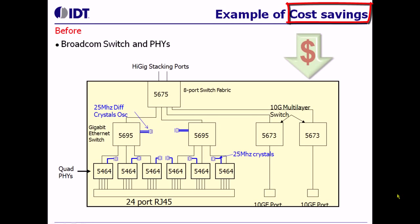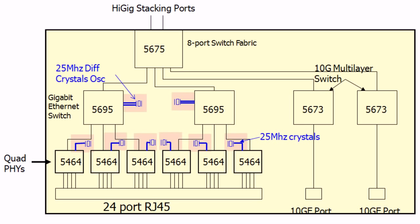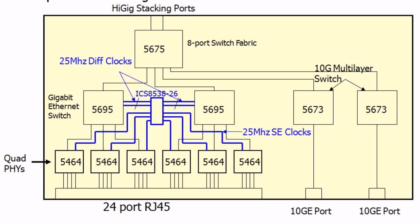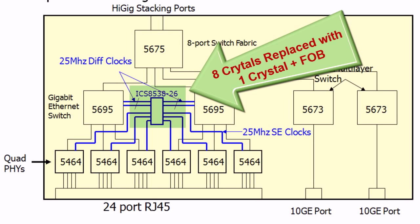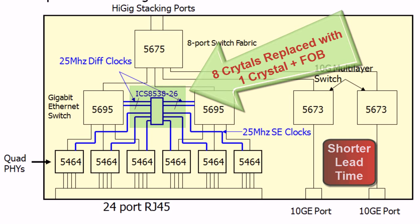Buffers can sometimes help designers reduce the cost and the total BOM of their boards. In this example, the original board used eight different crystals to clock the different PHYs, switches, and fabric. With the use of the AT538-26, we were able to replace all of the crystals with basically two parts: a crystal and a fan-out buffer. It helped reduce the overall cost of the board, and it also reduced the lead times for the crystals used on this board.